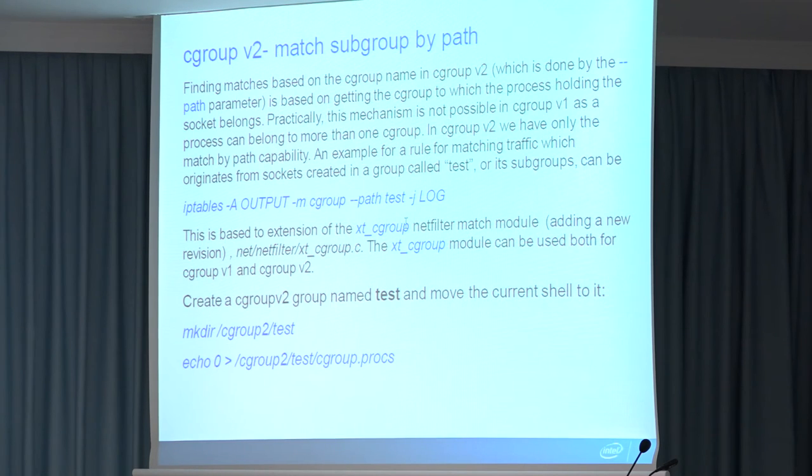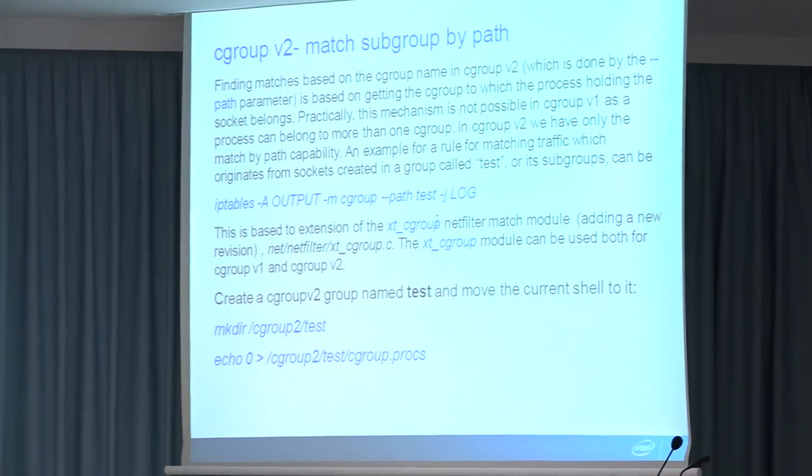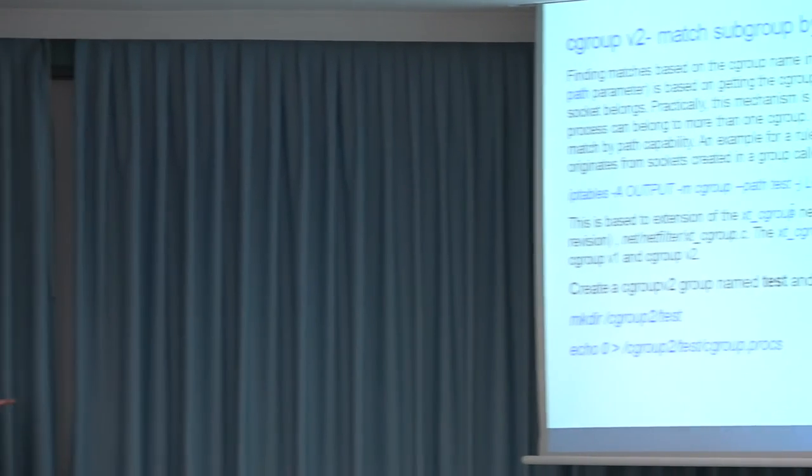Regarding network controllers: with Cgroup V1, we have two network controllers — net_cls and net_prio. With Cgroup V2, we will not have new network controllers. We already have support for V2, which needed some patches to the xt_cgroup module. The idea is that with Cgroup V2, we can use matching by the Cgroup name — for example, in the iptables command shown here, with the path test.